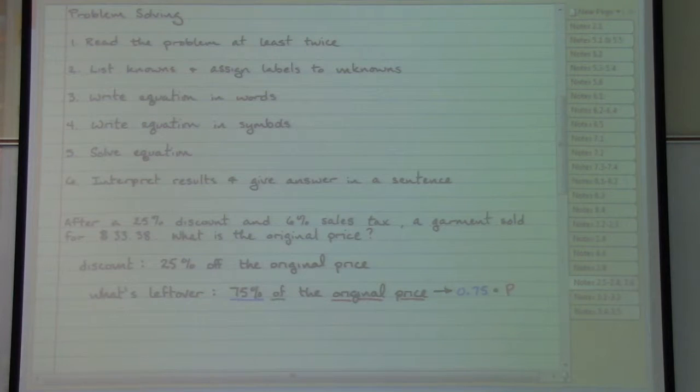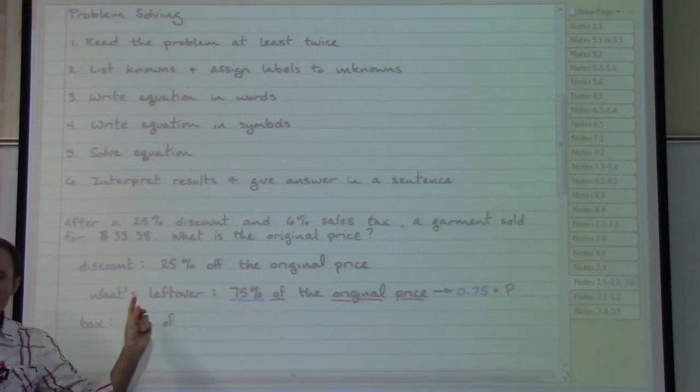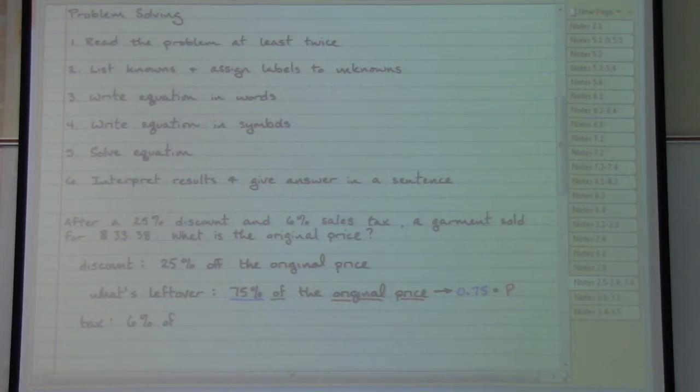So now we have an expression that is connected to that situation about what's left over. The other issue with our purchase is that once the discount has been taken care of, then sales tax is going to be applied. So we would need to worry about the sales tax, which is specifically 6%. Now we do need to be careful. 6% based on what? Is that going to be based on the original price, or is that going to be based on the sale price of what's left over? And the correct answer is that this sales tax is going to be based on the sale price, what's left over, not on the original price. So we would want to make sure that we are recognizing that.